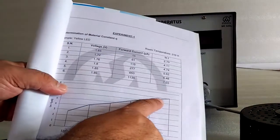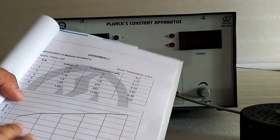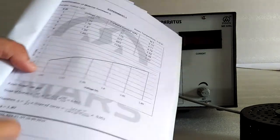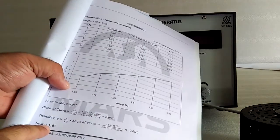Here in the manual, we have the graph. Follow the procedure as per the manual. Then, by slope of the graph, you can find the material constant.